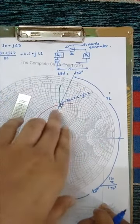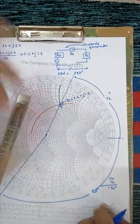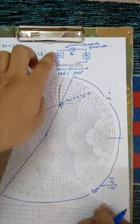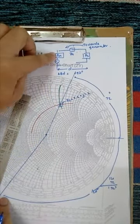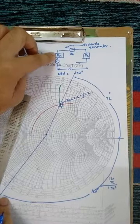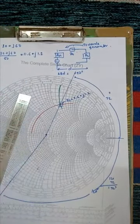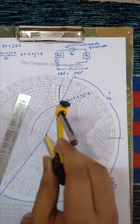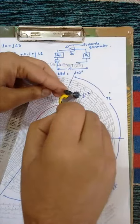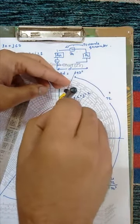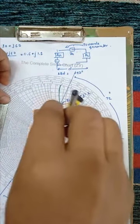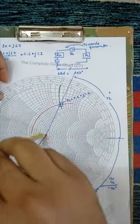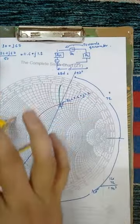Having moved 192 degrees from ZL towards the generator, I arrive at the new point Zin. I draw the constant |Γ| circle passing through ZL, and this constant circle intersects the new angle line at the Zin location on the Smith Chart.